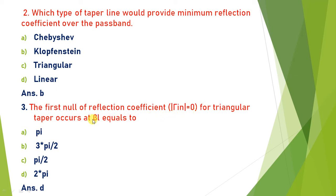Next: the first null of the reflection coefficient Γin = 0 for a triangular taper occurs at βl equals what? For a triangular taper, the first null occurs at βl = 2π. If you refer to the theory of triangular taper, from the origin the first null occurs at βl = 2π.